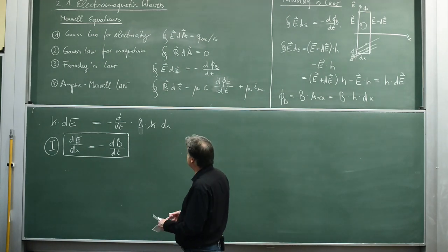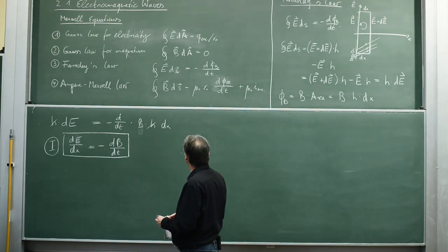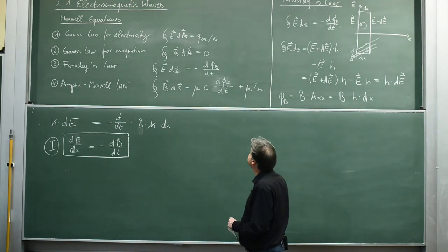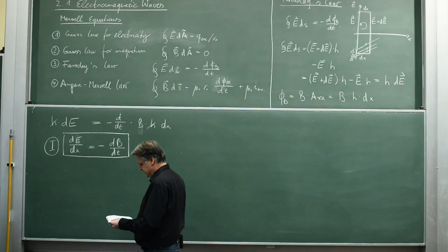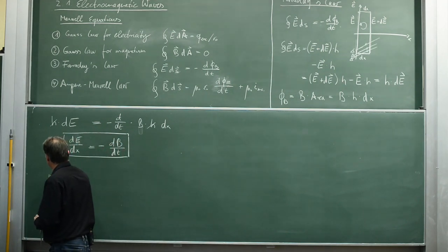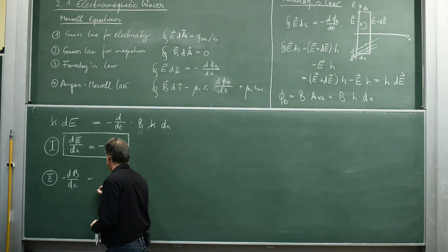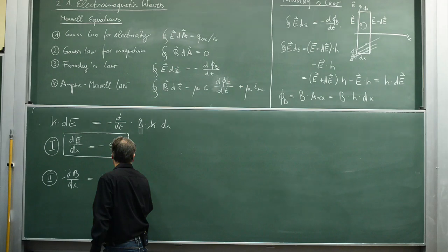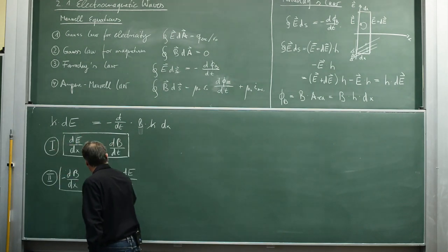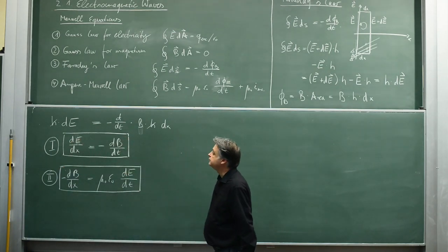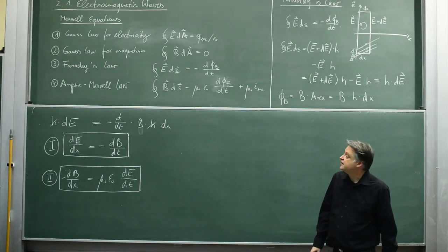We did a similar derivative for the Ampere-Maxwell law: line integral B dS, and on the other side epsilon naught mu naught d phi E by dt. Here we get the second expression: minus dB by dx is mu naught epsilon naught dE by dt. This is the new version of our two Faraday and Maxwell expressions.